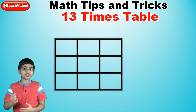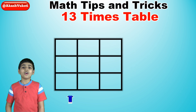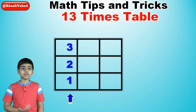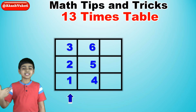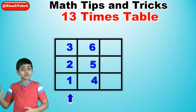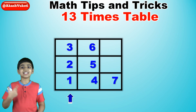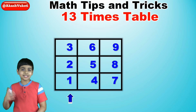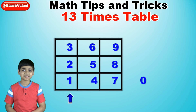Starting from the bottom left, we go 1, 2, 3, move to the next column — 4, 5, 6 — move to the next column — 7, 8, 9. And then we put a 0 next to the box.